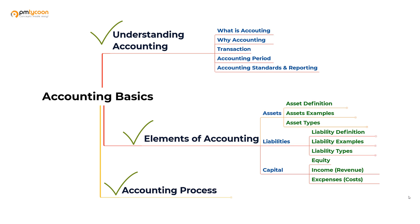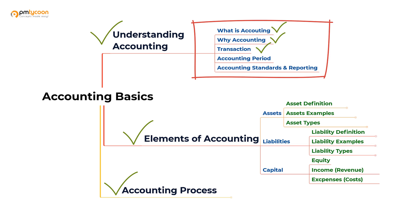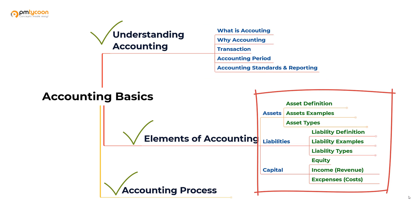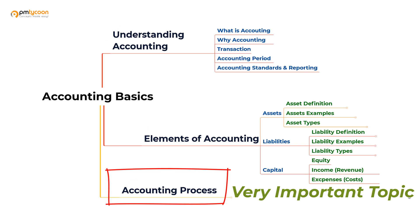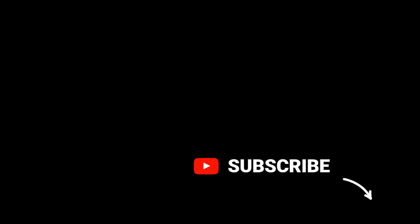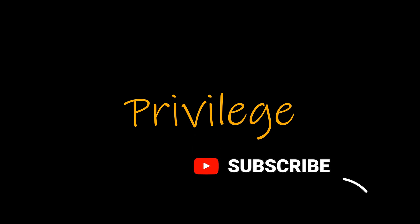There are three sections: understanding accounting, elements of accounting, and accounting process. Under understanding accounting, we learned what accounting is and why it is important, what a transaction is, the different accounting periods, and some board names and standards. Now we have completed elements of accounting. The crucial part coming up is the accounting process, where you will learn all the concepts of accounting. If you like the content so far, please give a thumbs up and subscribe, as it would be a privilege to have you on the subscribers list.